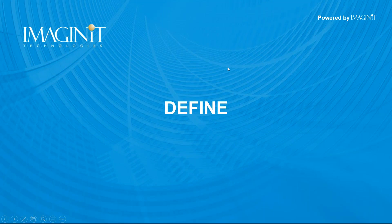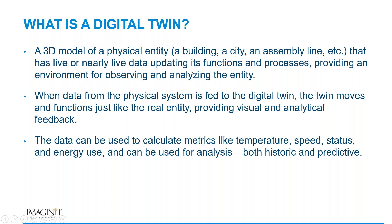We're going to start today with a quick definition going through what digital twins are, and then Jeff is going to explain what reality capture is and the different ways we can achieve both of these sought-after forms of information. A lot of people have different opinions on what a digital twin is, but essentially a digital twin is a 3D model of a physical entity. The 3D portion is pretty important because we already have things like smart cities and analytical information that we can gather from field data, but tying that into the 3D representation and making sure that it is accurate, live, and in real time is really the important part.